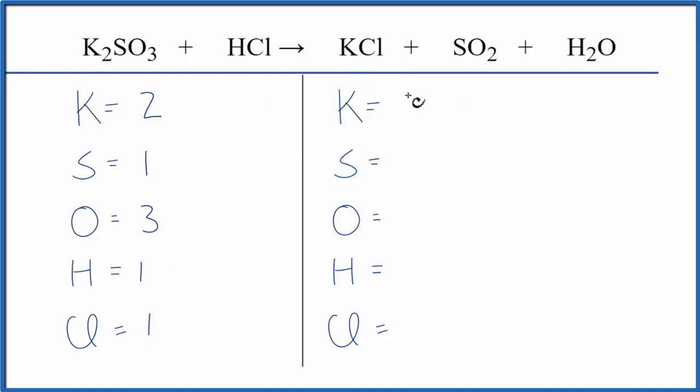On the product side, we have one potassium, one sulfur. Oxygens, we have two, and be careful, we have another one right here. Two plus one, that gives us three oxygen atoms, two hydrogens, and then the one chlorine atom.